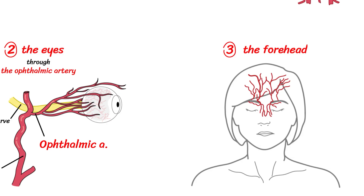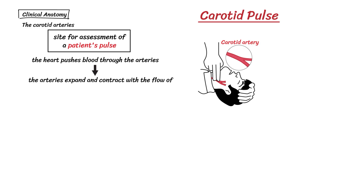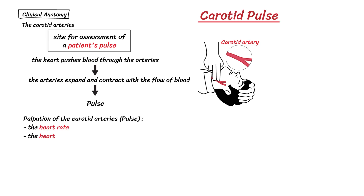Now that we've given an overview of the anatomy of the carotid arteries, let's look at how these structures are clinically relevant. The carotid arteries are a commonly used site for assessment of a patient's pulse. As the heart pushes blood through the arteries, the arteries expand and contract with the flow of blood. Palpation of the carotid arteries in the neck can be used to assess the pulse rate, heart rhythm or character, and the strength of the pulse.